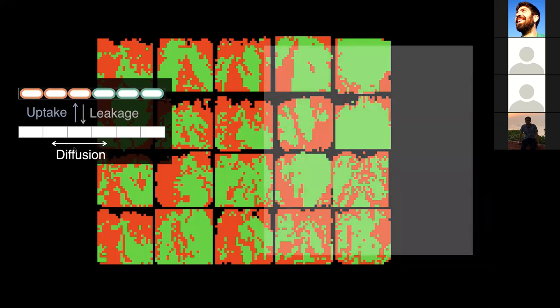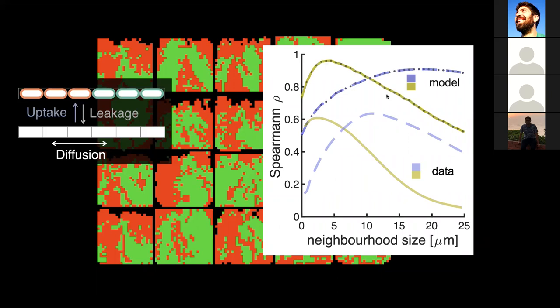If we do this analysis on the predicted growth rate — the same analysis we did with the experimental growth rate — we find the same correlation. This means the model is able to recapitulate the correlation analysis and the presence of an interaction range between the two cell types. Both the experimental and predicted growth rates suggest that the two cell types interact at a finite range and that these two ranges are different. This means we can explain the range of interaction with the few mechanisms included in the model: the uptake, leakage, and diffusion of amino acids.